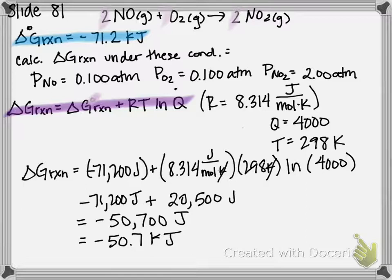So then, technically, we're not quite done because the question also asks us: is the reaction more or less spontaneous under these conditions than standard conditions? So if we look up at our delta G naught, our standard conditions, it's negative 71.2, and under non-standard conditions it's negative 50.7.